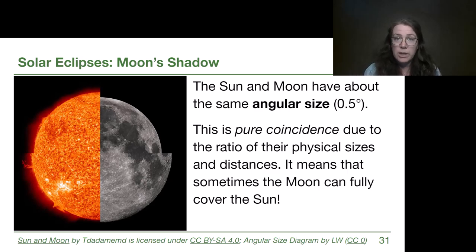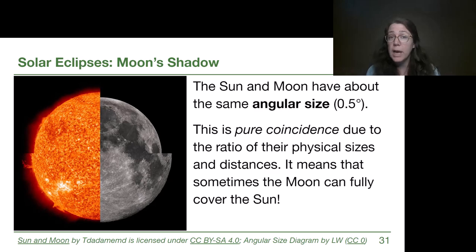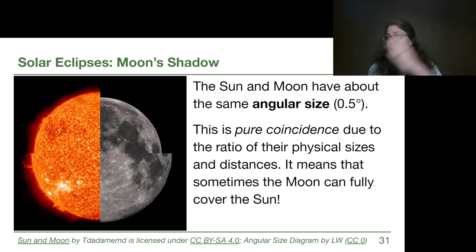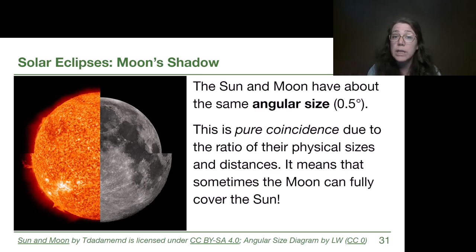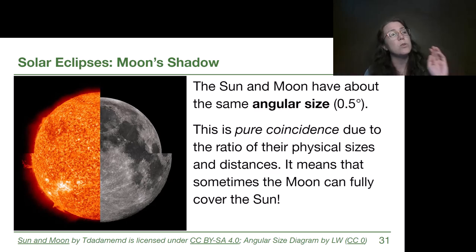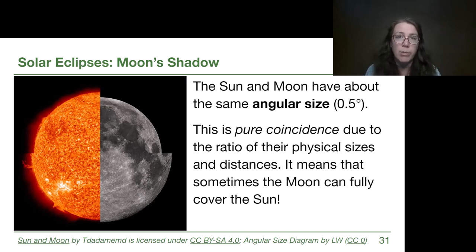Solar eclipses on Earth are actually remarkably cool and unique to our Earth-Moon system. The Moon is surprisingly big compared to our planet, and it's remarkably close to us. What that ends up meaning is that the Sun and the Moon each take up the same overall angular size in our sky — about half a degree. The Sun is larger than the Moon by about a factor of 400, but the Sun is also farther away, so it looks small. Just as a toy car held near your face can appear the same size as a real car down the road — that's angular size. This is pure coincidence.